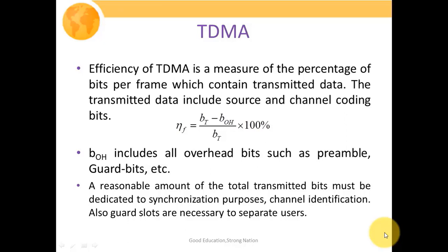Efficiency is the ratio of information bits to total transmitted bits. When solving numerical problems, focus on which bits comprise the information. Overhead bit information may be given in sub-component form such as synchronization bits, guard bits, control bits, etc. Subtract those bits from the total number of bits to get the information bits, then take the ratio with BT and multiply by 100 to get efficiency as a percentage.